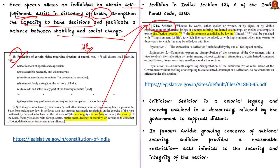Importantly, whatever contempt, disaffection, or hatred is directed towards the government — not the country — amounts to sedition, so the ruling government can misuse this provision. According to this section, sedition shall be punished with imprisonment up to three years or life term, to which a fine may be added. A person charged under this law is also barred from a government job.